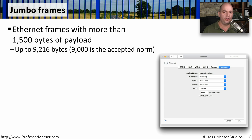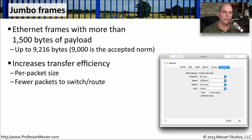This is why we created jumbo frames. Jumbo frames allow us to increase the maximum size of the payload to 9,216 bytes. On most devices you'll use and configure, you'll see 9,000 bytes as generally the maximum — a good standard for maximizing data transfer. Now that our frames are bigger, we're transferring a lot more with a single frame, so there are fewer frames going back and forth, making file transfers that much faster.